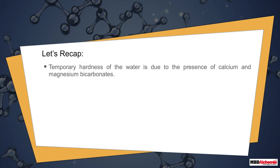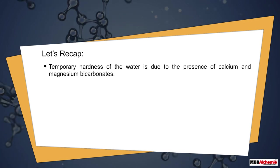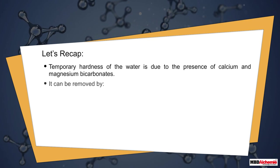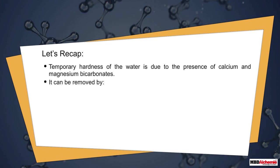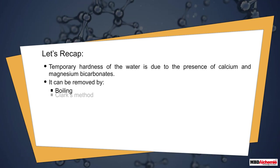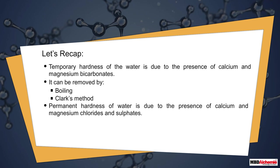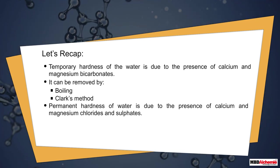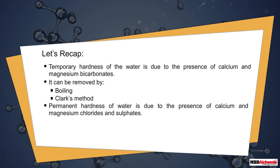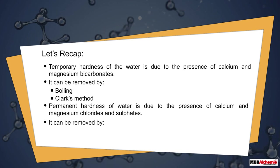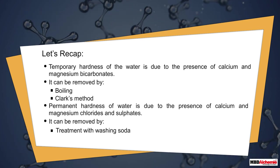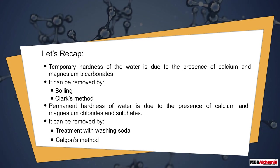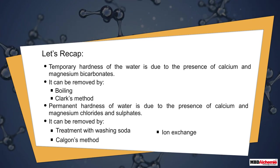Let's recap. Temporary hardness of water is due to the presence of calcium and magnesium bicarbonates; it can be removed by boiling or by using Clark's method. Permanent hardness of water is due to the presence of calcium and magnesium chlorides and sulfates; it can be removed by treatment with washing soda, Calgon's method, ion exchange method, or synthetic resins method.